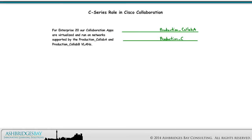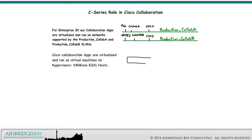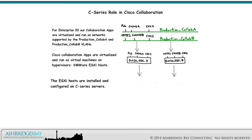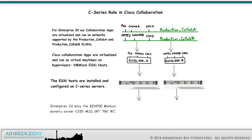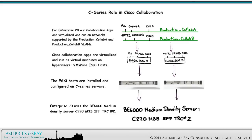For Enterprise 20, our Collaboration apps are virtualized and run on networks supported by the Production Collab A and Production Collab B networks. Cisco Collaboration apps are virtualized and run as virtual machines on VMware ESXi hosts. The ESXi hosts are installed and configured on C-Series servers. Enterprise 20 uses the BE6000 medium density server C220M3SSFFTRC2. Deployment of other C-Series servers are very similar and we'll discuss other options as soon as we can.